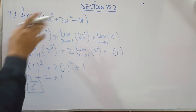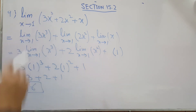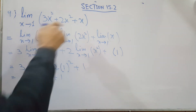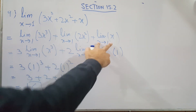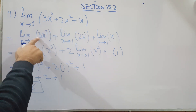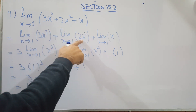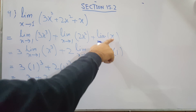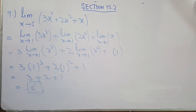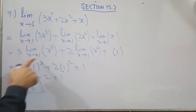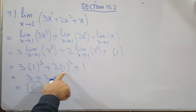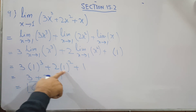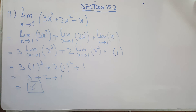The next question is limit x approaches to 1 of 3x cubed plus 2x squared plus x. We apply the limit separately on all three terms, taking constants out as coefficients. Substituting x=1: 1 cubed is 1 times 3 is 3; 1 squared is 1 times 2 is 2; plus 1. This gives us 3 plus 2 plus 1, which equals 6.